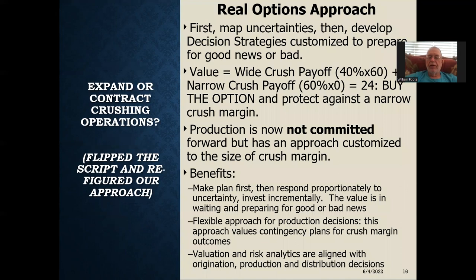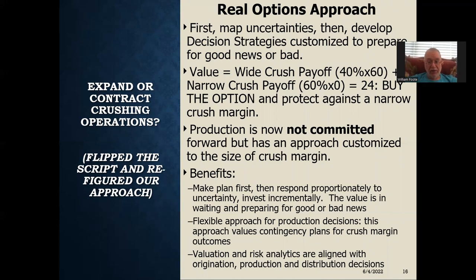Here's the figuring. Production is now not committed — we have not exposed ourselves to the future. When we looked at the decision tree approach, we discovered latent in the decision a commitment forward exposing us to market dynamics we have no control over. Now we have aligned a flexible approach — we have aligned valuation and risk analytics inside of our decision. This is key. We expanded our horizons. We flipped the script.